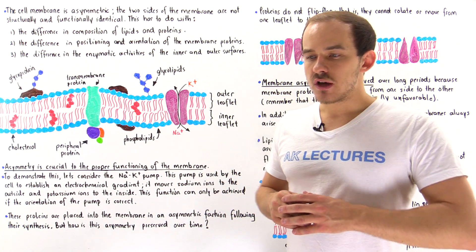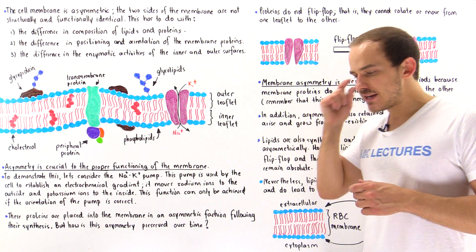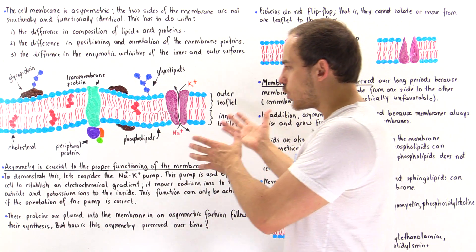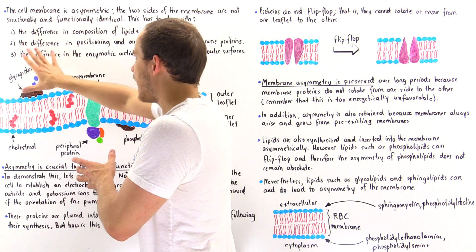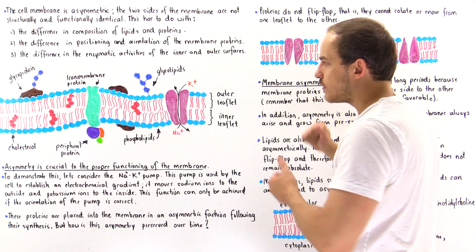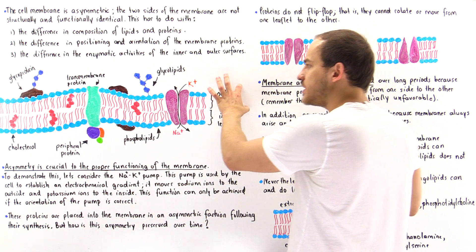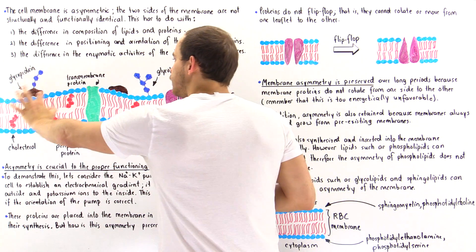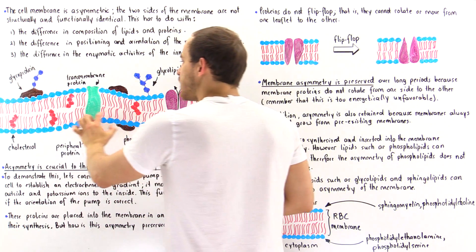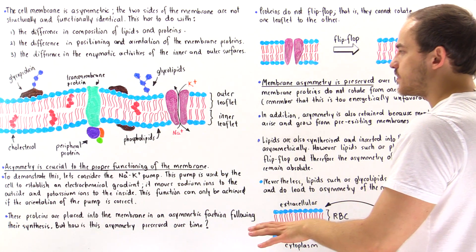Let's take a small section of the membrane that we typically find in the cells of our body. This is the outside, this is the inside, and because we have a bilayer membrane, we have two layers — let's call this the outer leaflet, that points towards the outside, and this the inner leaflet, that points towards the cytoplasm.